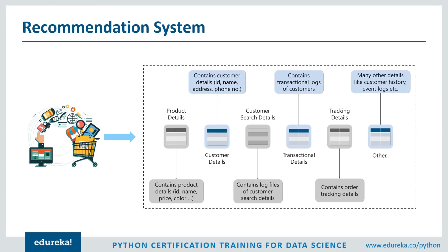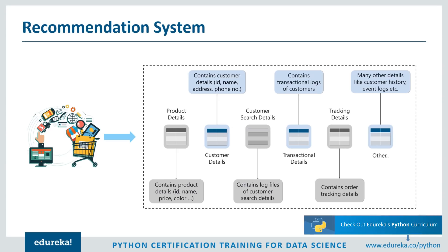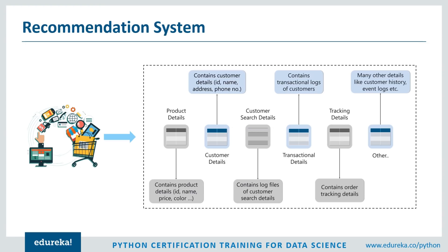A recommendation system basically filters down a list of choices for each user based on their browsing history, ratings, profile details, transactional details, and card details. Such a system is used to get useful insights about customer shopping patterns and provides every user a particular view of the e-commerce website based on their profile, allowing them to select relevant products. For example, if you're looking for a new laptop on Amazon, there is a possibility you might want to buy a laptop bag too. Amazon decides this by studying the details of similar transactions, mapping them together, and then suggesting relevant items.